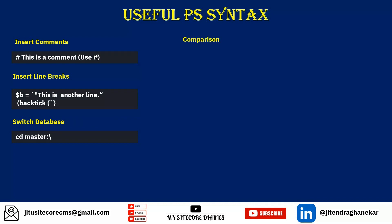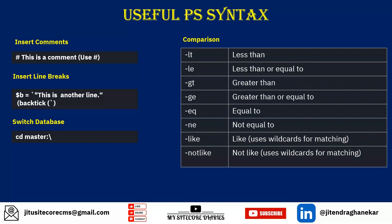Comparison operators — this is a very important table. The syntax is different from C#. If you want less than, you use -lt. Less than or equal to is -le. Greater than is -gt. Greater than or equal to is -ge. Equal to is -eq. Not equal to is -ne. Like is -like, and not like is -notlike. These are the keywords you use in if statements or any comparison.